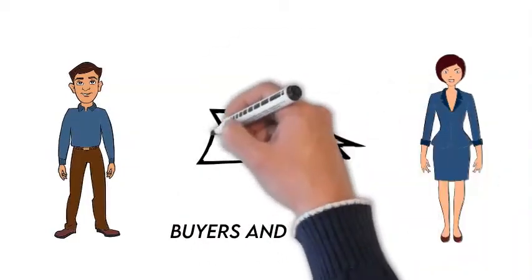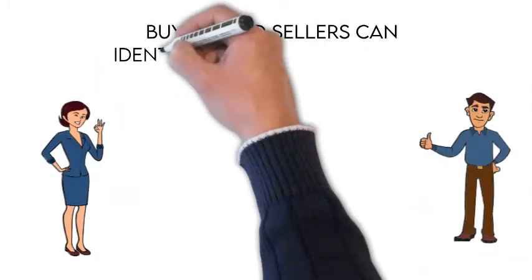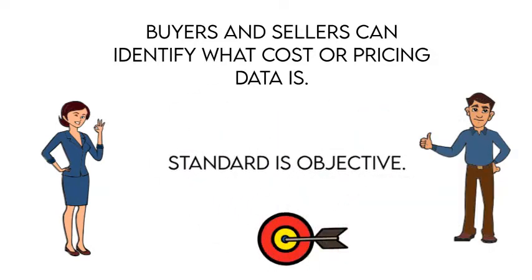You'll notice the image above depicting that cost or pricing data are facts that exist in a negotiation. The definition of cost or pricing data presumes that both buyers and sellers, who are the parties to a negotiation, can identify what cost or pricing data is and that the standard for what rises to the level of cost or pricing data is an objective one.